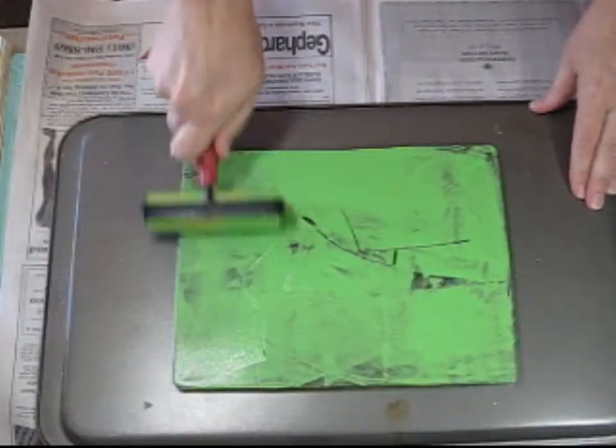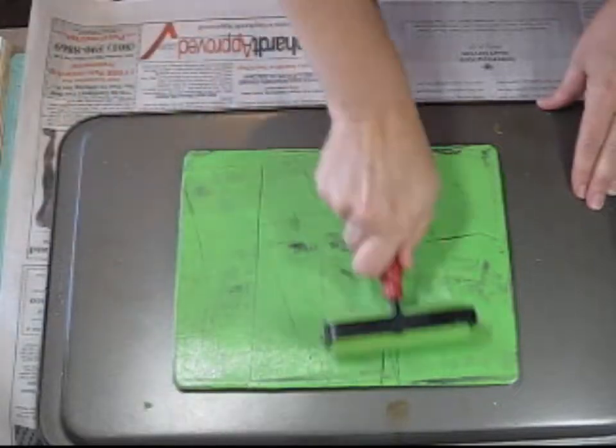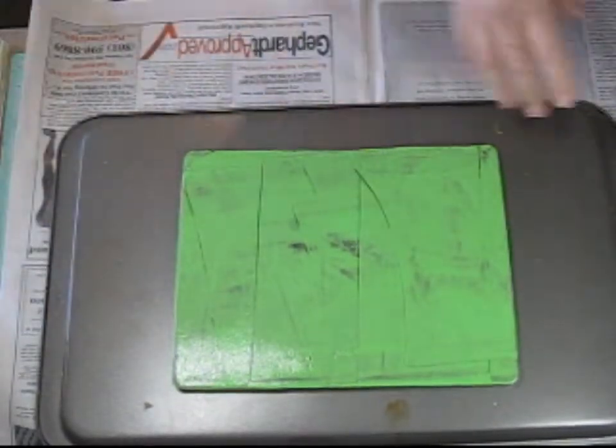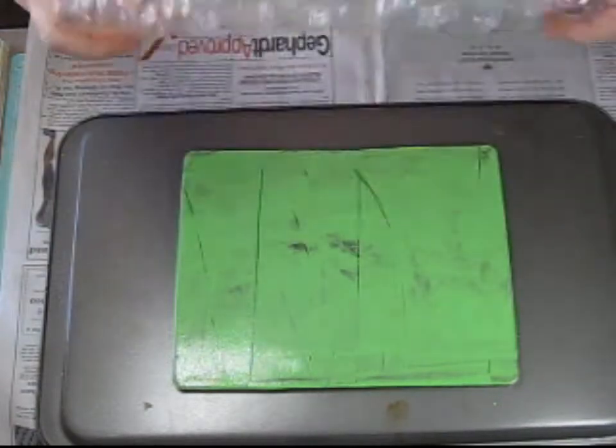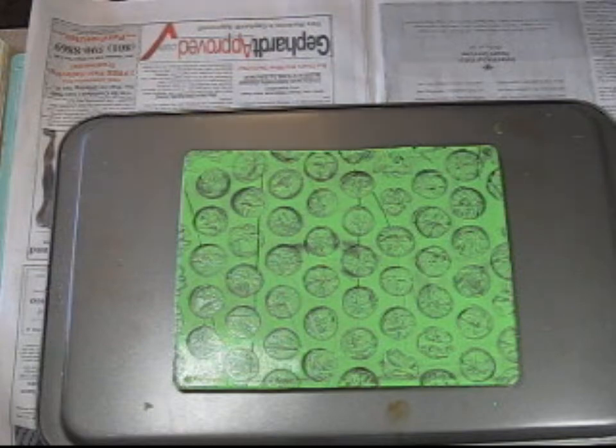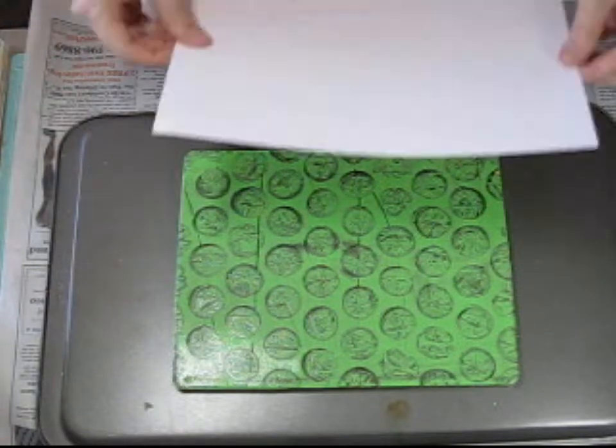So you can at least get two, sometimes three different prints from one application of paint. So you can see me putting my green acrylic paint down now. And this bubble wrap makes an awesome print. It's one of my favorites with the jelly plate. You can see those cool circles.